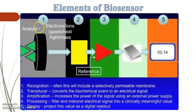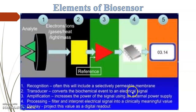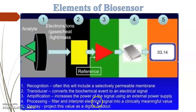First, the analyte will be recognized — this often includes a selectively permeable membrane. Second, the transducer converts a biochemical event to an electrical signal. Third, amplification increases the power of the signal using an external power supply. Processing filters and interprets electrical signals into a meaningful clinical value. Finally, the display projects this value as a digital readout.